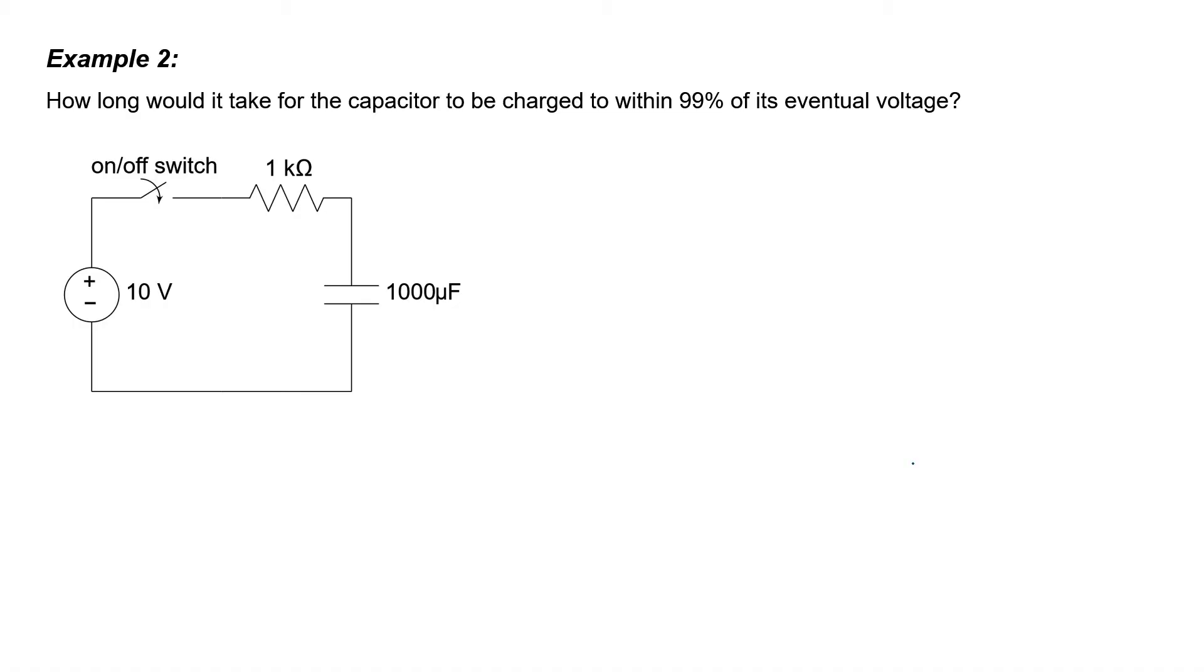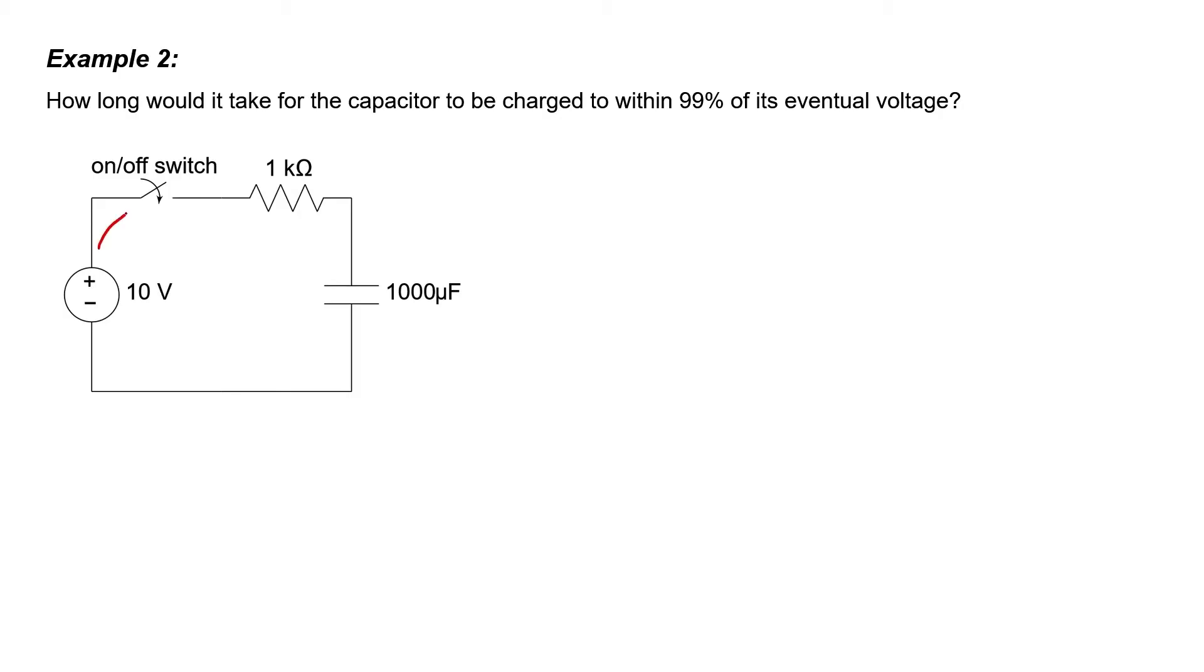In this example, we're asked how long it would take for a capacitor to be charged up to within 99% of its eventual voltage. We know that as soon as that switch is closed, current is going to start flowing from the source over to the capacitor. And that if we wait long enough, the voltage across that capacitor is going to hit 10 volts. The question here is how much time it takes to get to 9.9 volts. Let's call the current out of that source I. Let's call the voltage here the DC voltage. I know it's 10, but I want to keep it in variable form because it turns out that it doesn't matter whether it's 10 or some other number later. And let's call the voltage across the capacitor little v. Let's call this 1 kilo-ohm resistor R, and let's call this 1000 microfarad capacitor C.